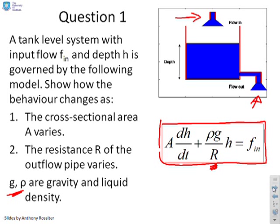What I encourage you to do is a thought experiment: what do you expect? If you increase the cross-sectional area, how do you expect the response of the depth to change? If you change the resistance of the pipe, how do you expect the behaviour to vary? Make sure you do that — get your engineering common sense — before you go through the maths to see the precise solution.